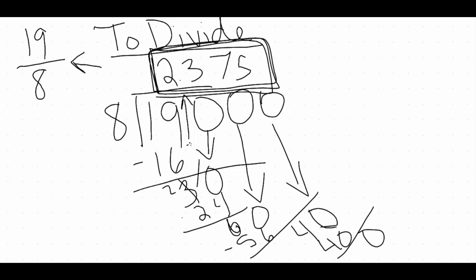The easier way to do that is to use a calculator, but some places and some teachers don't allow you to have a calculator, so you do need to keep in mind how to do it the longhand version just in case. If you are allowed a calculator, it's as simple as plugging in 19 divided by 8 and your calculator gives you the decimal. So let's go ahead and practice another one doing it by hand.